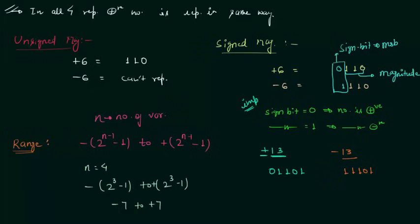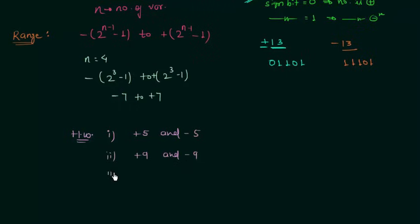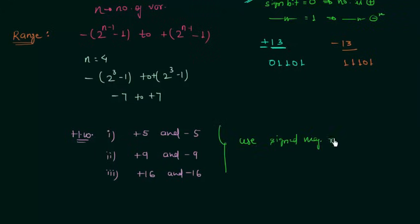Now we will move to homework problems. There are 3 homework problems. In the first, represent plus 5 and minus 5. In the second, represent plus 9 and minus 9. In the third, represent plus 16 and minus 16. Use signed magnitude representation for all problems. That is all for this presentation — see you in the next one.